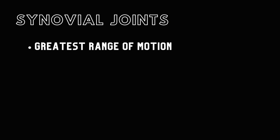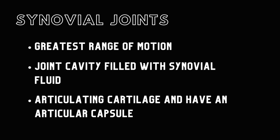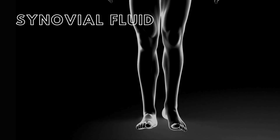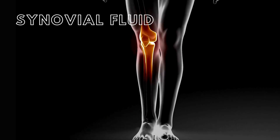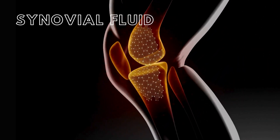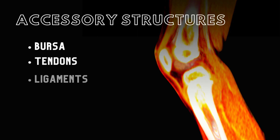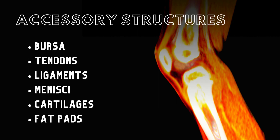Synovial joints exhibit the greatest range of motion. These joints have a joint cavity filled with synovial fluid. They contain articulating cartilage and have an articular capsule made of connective tissue and lined with a synovial membrane, which secretes synovial fluid. Synovial fluid nourishes and lubricates the joint cartilage. This joint may have accessory structures such as bursa, tendons, ligaments, muscles, menisci, cartilages, and fat pads.